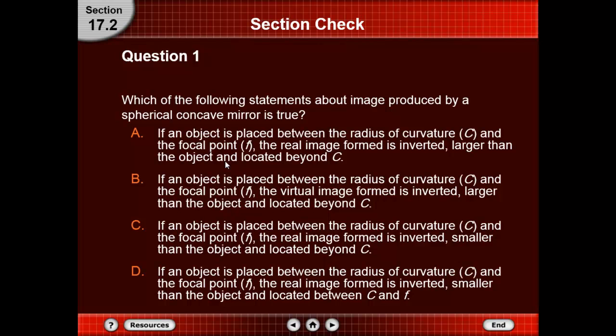Option C: if an object is placed between the radius of curvature and the focal point, the real image formed is inverted, smaller than the object, and located beyond C. Option D: if an object is placed between the radius of curvature and the focal point, the real image formed is inverted, smaller than the object, and located between C and F. Which one is correct?